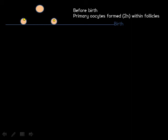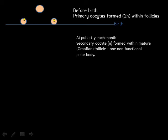These oocytes are contained in a sphere of ordinary cells called a follicle. The follicles then remain in a dormant state until puberty when, each month, just a few of them are stimulated to start to grow and develop into mature or Graafian follicles, and the oocyte inside them divides.